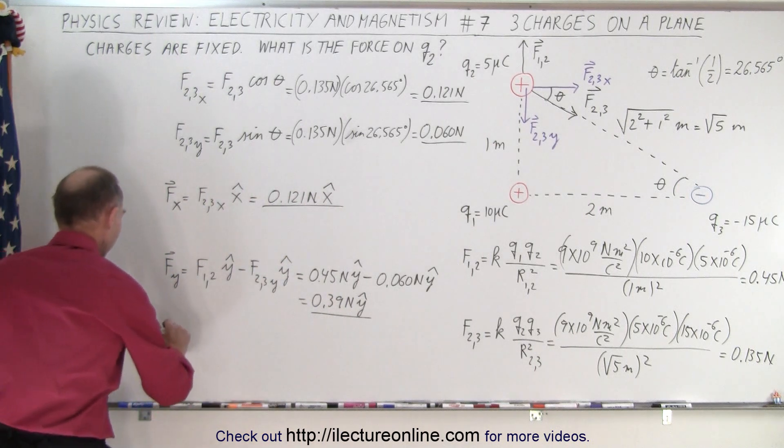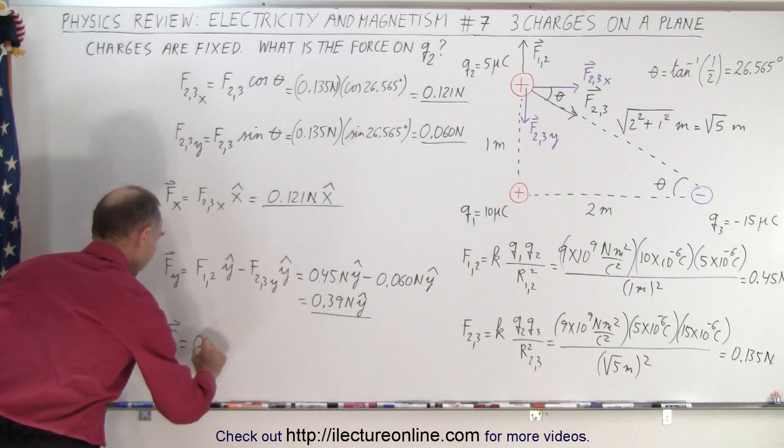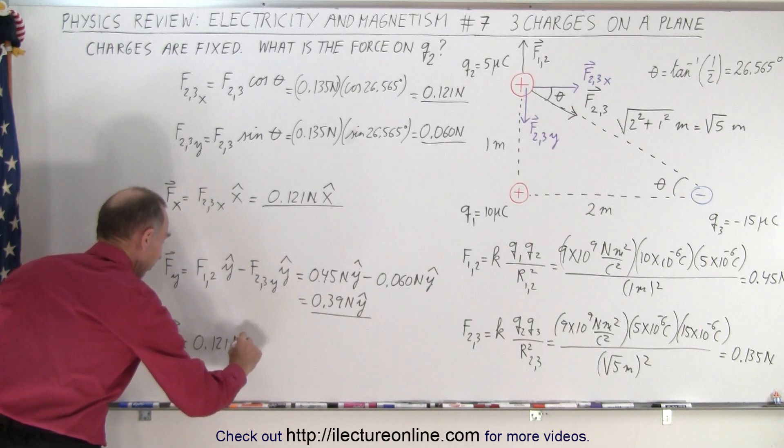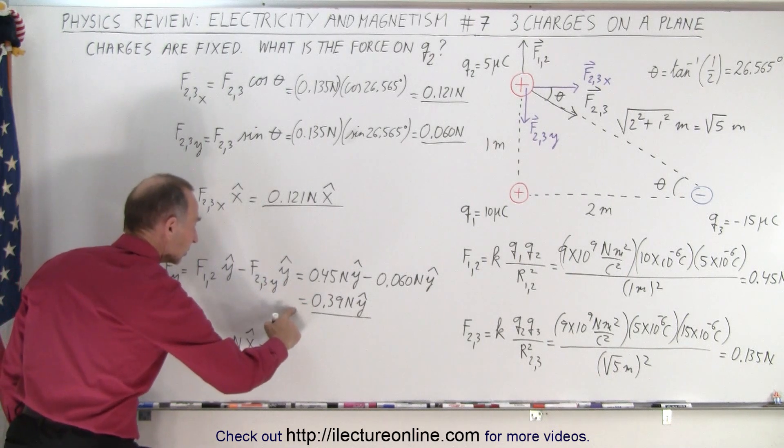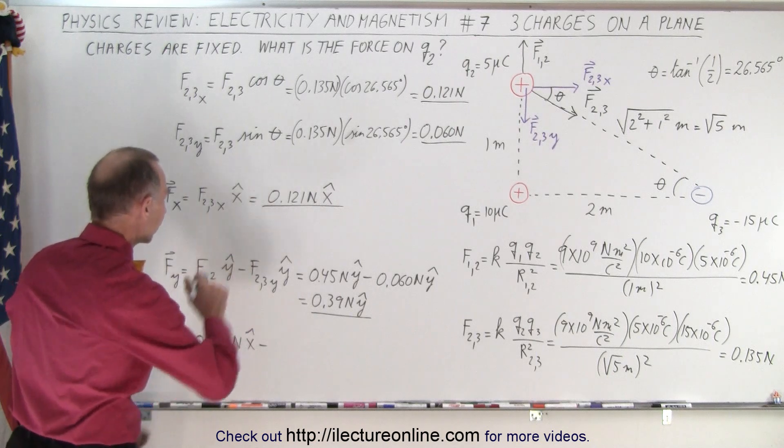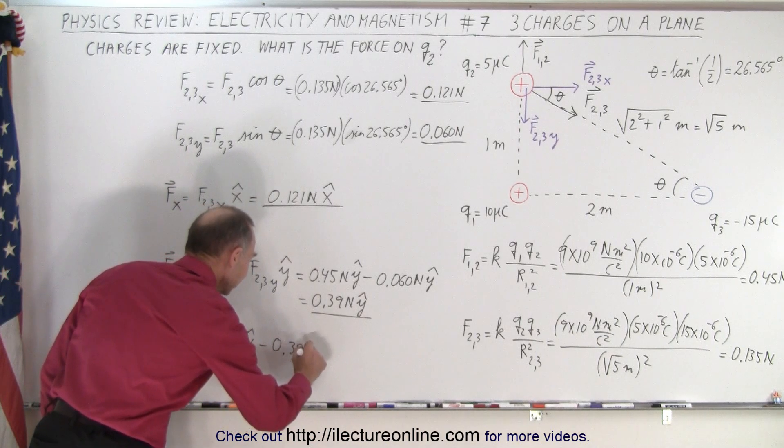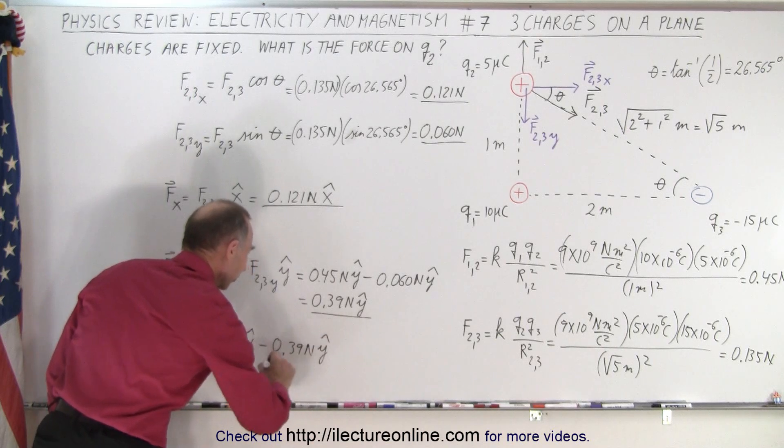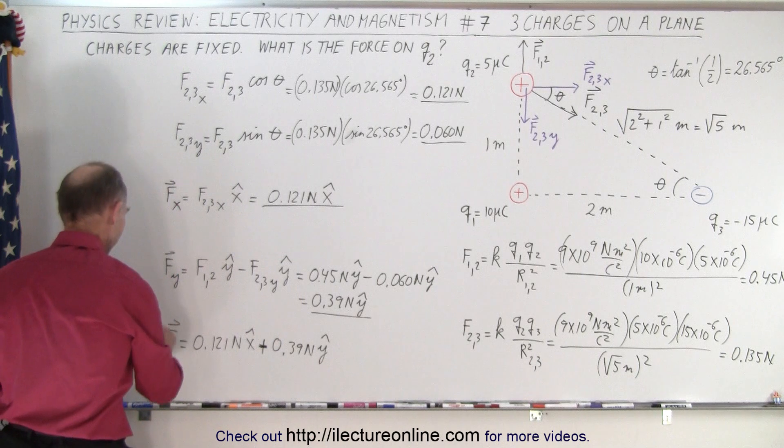So f is then going to be equal to the x component, 0.121 newtons in the x direction, plus 0.39 newtons in the y direction. For a moment there, I thought it's supposed to be minus, it's supposed to be plus. They're both positive.